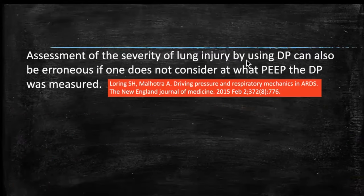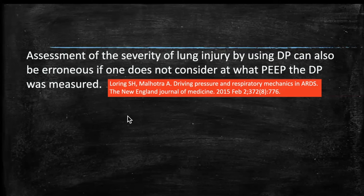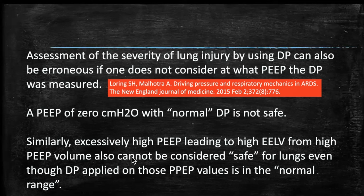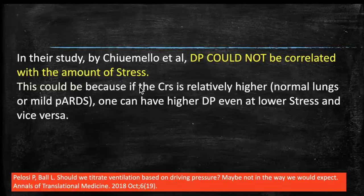Assessment of lung injury severity using driving pressure can be erroneous if one does not consider at what PEEP the driving pressure was measured — noted in the editorial of the New England Journal of Medicine where Amato's paper was published. A safe driving pressure of only 12, if applied at PEEP zero, can be harmful. Similarly, excess PEEP leading to high end-expiratory lung volume is also not acceptable — a driving pressure of 12 at very high PEEP causing high global strain is unacceptable.